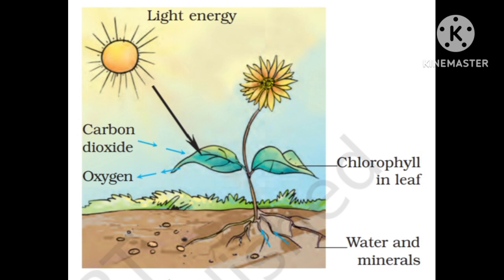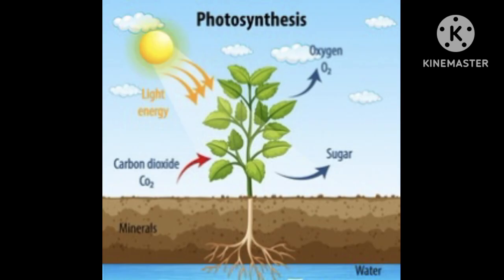This process of food preparation in the plant leaf is called photosynthesis. Photo means light; synthesis means to combine. Thus, the sun is the ultimate source of energy for all living organisms. The survival of almost all living organisms directly or indirectly depends upon plants.